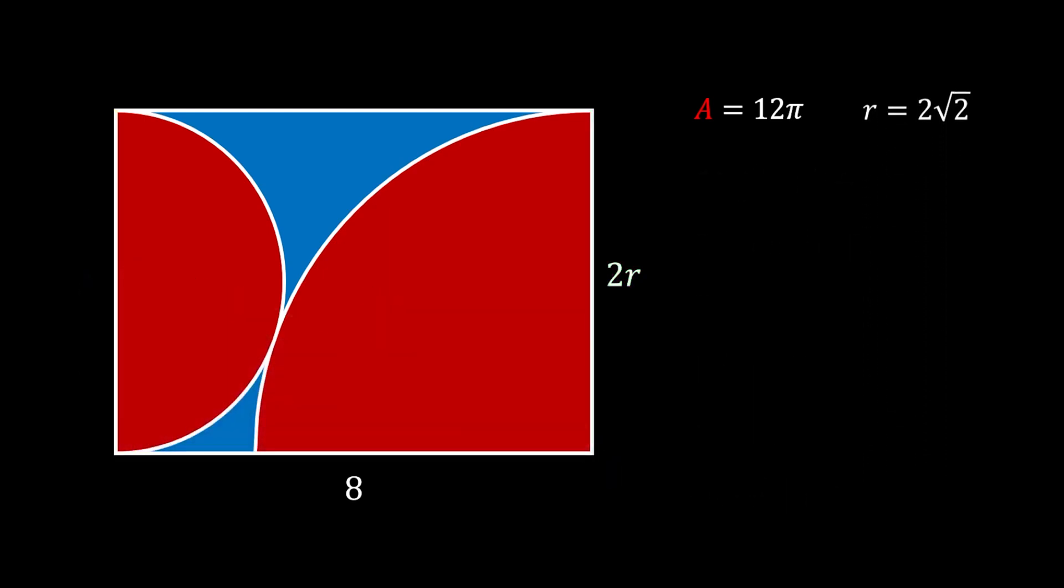With this in mind we can now calculate the area of our rectangle. Since we know that the area of the rectangle is equal to the product of its length and height, that means that in our case that is 8 times 2r. Now we can substitute the value of r which we got before. Now if we simplify this we will get that the area of our rectangle is equal to 32 square root of 2.